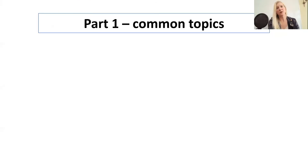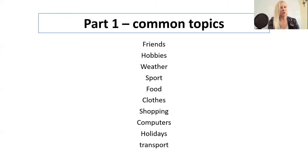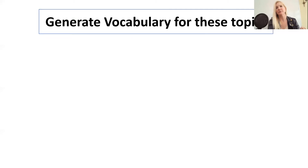As you probably already know, there are common topics that come up in speaking: friends, hobbies, weather, sport, food, clothes, shopping, computers, holidays, transport. So again, if you know these topics, you can generate vocabulary for them.